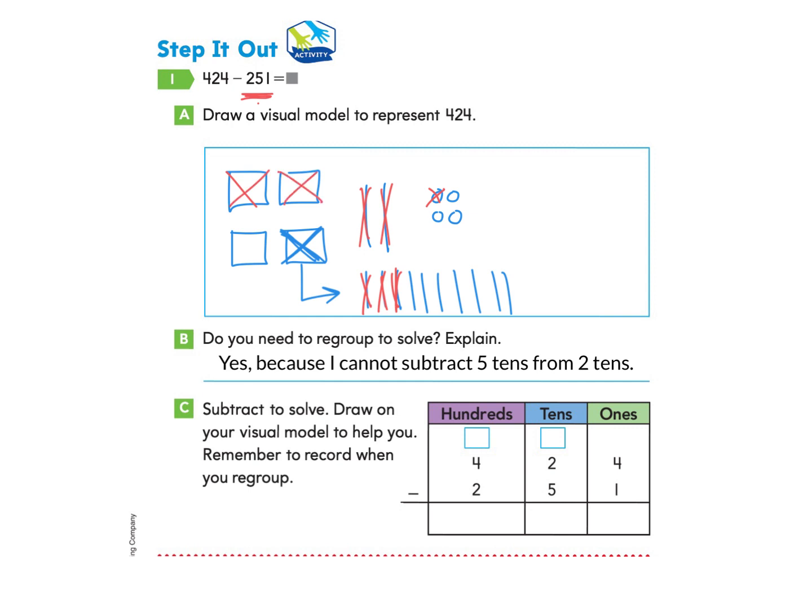What do we have left? We have three ones. We have seven tens and 100. So our answer would be 173.